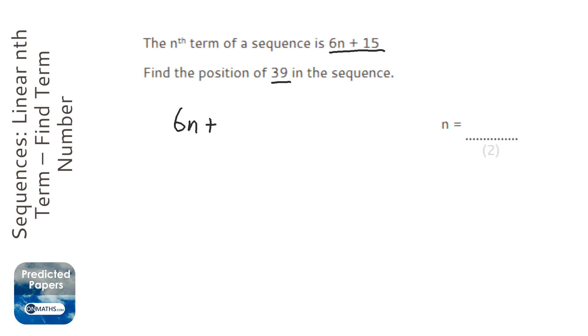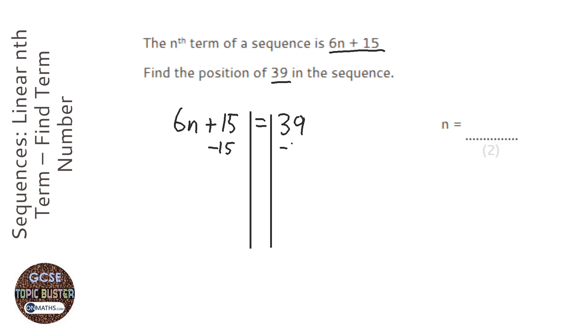So 6n plus 15. What is n when all of that equals 39? I'm going to put my lines down. I'm going to take away 15 first of all. So that's going to be 6n equals 24.